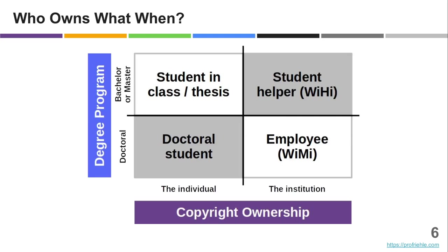There are two situations — a two-by-two matrix. On one hand, the individual: if they contribute as an individual, they own the copyright to their work and hence may share in the copyright of your research software. Or it's the institution: if it was work done on behalf of the institution, the institution owns it.